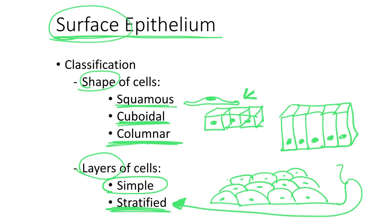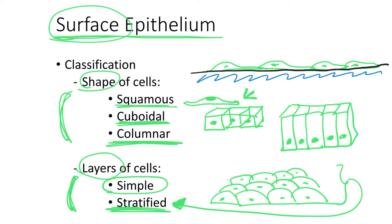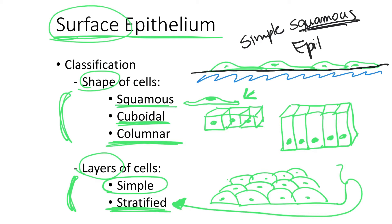The name of the surface epithelium will state both the shape of the cells and the number of layers of cells. So we can have several squamous cells next to each other, all touching the basement membrane that separates the epithelium tissue from the underlying connective tissue. When we have this single layer of squamous cells, we call this epithelium simple squamous epithelium.